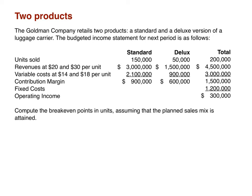We need to compute the break-even points in units, assuming that the planned sales mix is attained. The first thing we want to do is figure out our sales mix by taking the number of units sold of each product. We have 150,000 standard units and 50,000 deluxe units. Reducing this ratio, 50,000 goes into itself once and into 150,000 three times, so our sales mix is a 3-to-1 ratio.